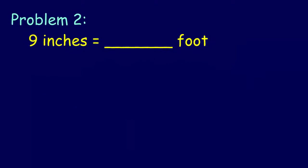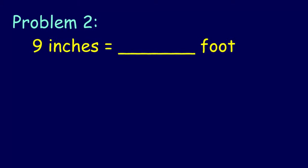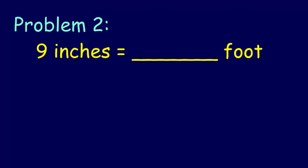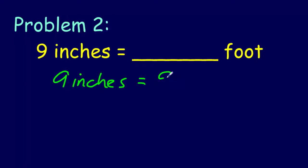Let's go into another problem. Problem two. Now we're back to customary units. Nine inches is equal to how many feet? Let's go ahead and rewrite this as nine inches is equal to nine times one inch, because nine times one inch is nine inches — nine copies of one inch. Now, what fraction of a foot is one inch? This might be where you want to draw a tape diagram to help you.